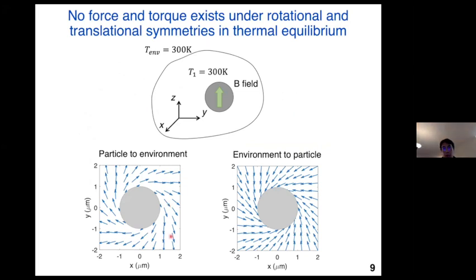It is evident that null force and torque should act on a single sphere in thermal equilibrium with the environment. The particle radiation carries angular momentum to the environment, but that angular momentum is exactly cancelled by the angular momentum from the environment radiation. So in thermal equilibrium, no net torque acts on the sphere, and therefore the sphere does not rotate or experience any forces. In the following, we will mainly consider thermal non-equilibrium situations.